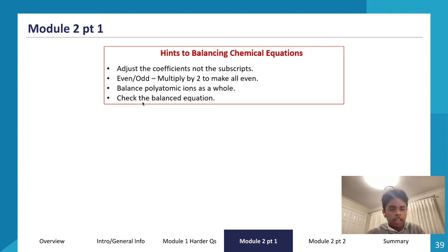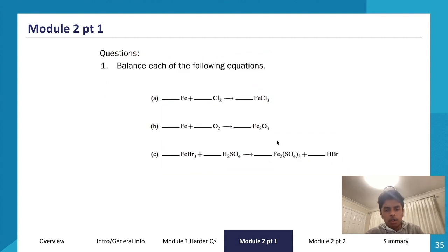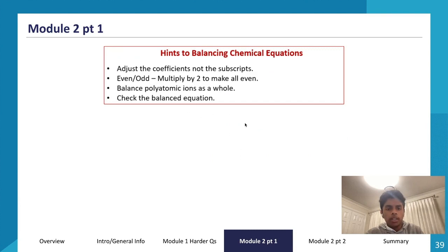If there are odd and even pairs of atoms, multiply both by two to make everything even. And as mentioned, we consider polyatomic ions as a whole — for example, sulfate SO4 is not broken up into sulfur and oxygen; we treat the polyatomic ion as one unit. Always check your balanced chemical equation at the end to make sure you got it right.